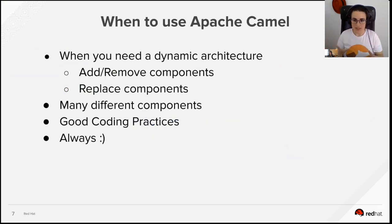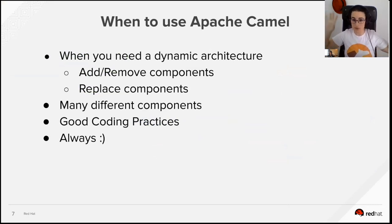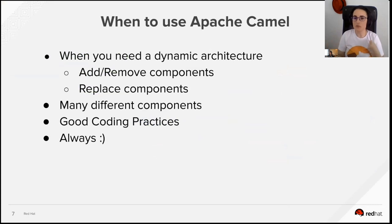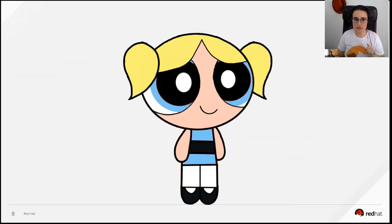When should you use Camel? I'd advise using it always, unless you have a very contained application that doesn't interact with anything. It's especially useful for complex architectures with many different components, and particularly when you have a dynamic architecture where you need to add and remove steps easily — like replacing a database with Elasticsearch. Apache Camel will help you do this very easily.